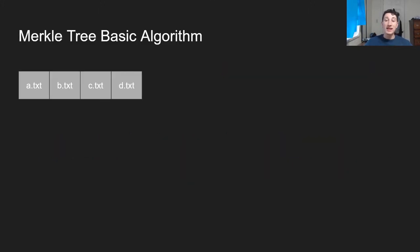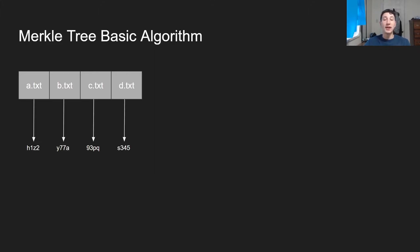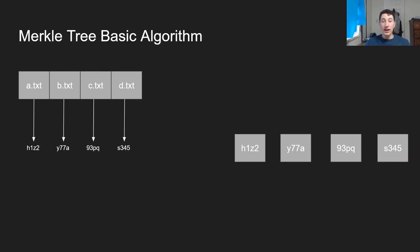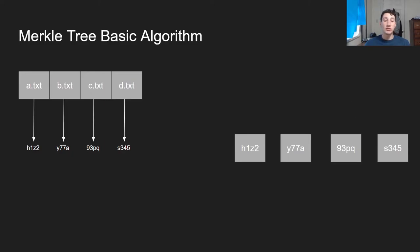Let's look at the basic algorithm for a Merkle Tree. We have these four files here: A, B, C, and D. The first thing we're going to do is calculate some hashes for them, and these are going to be the leaf nodes in our tree. Every single parent node is going to incorporate the two child hashes into its own hash. To get the hash of a parent node, you concatenate the two strings of each child node and then take the hash of that.